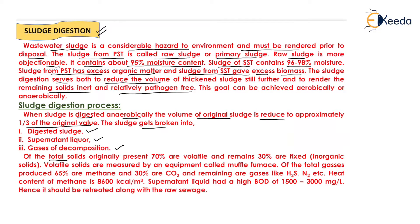Out of the total solids originally present, 70% are volatile — meaning if we burn that solid it will escape into the atmosphere — and the remaining 30% are fixed, that is inorganic solids. Volatile solids are measured using equipment called a muffle furnace. Of the total gases produced, 65% are methane and 30% are carbon dioxide.